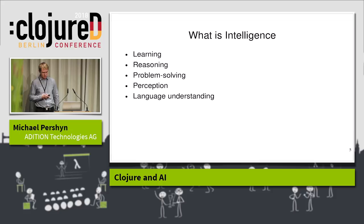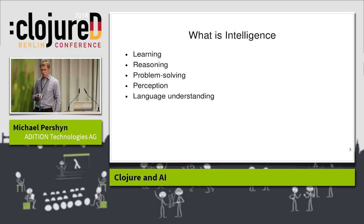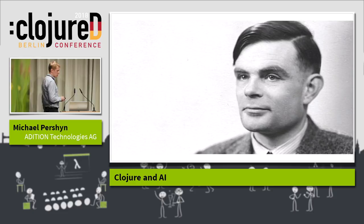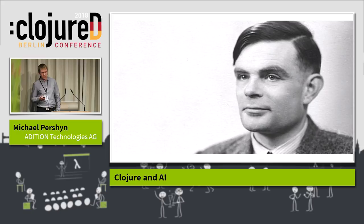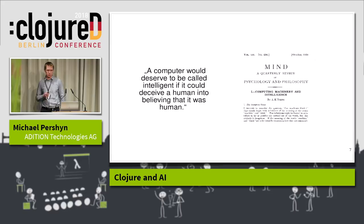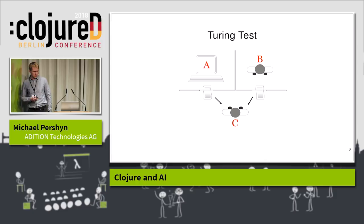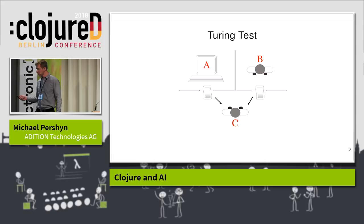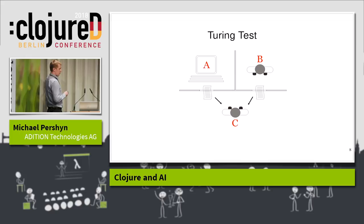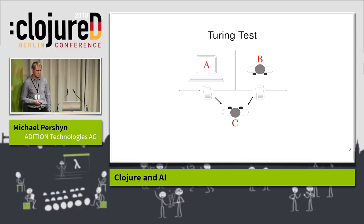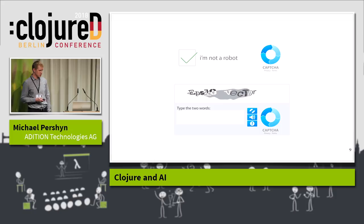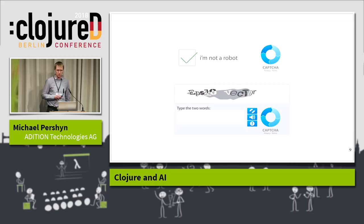Some great minds have been thinking about AI a lot. One of them is Alan Turing, who invented the Turing machine — a mathematical model for computation — and also cracked the Enigma code. He was interested in AI and introduced a test for machine intelligence. He said that a computer would deserve to be called intelligent if it could deceive a human into believing it was human. There are Turing tests conducted where an examiner chats with human and computer partners and has to identify which is which. A reversed form of this test is widely used on the internet — it's called CAPTCHA. And it feels like AI these days is way different from just passing the Turing test — it's way more.